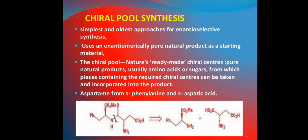In chiral pool synthesis, the simplest and oldest approach, we use naturally occurring pure natural products like amino acids and sugars. These provide naturally available, readymade chiral centers. We use those chiral centers from the chiral pool and then incorporate them into the desired product. So this method of using naturally occurring pure natural products is called chiral pool synthesis.